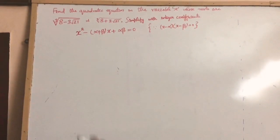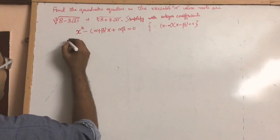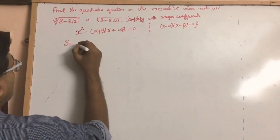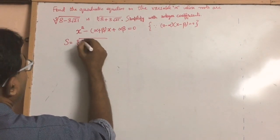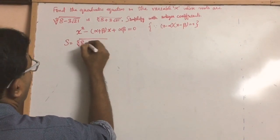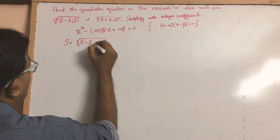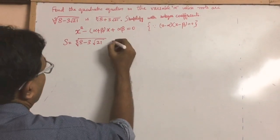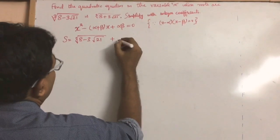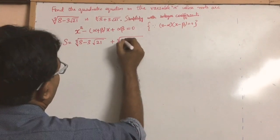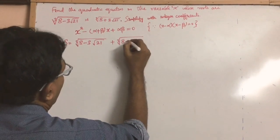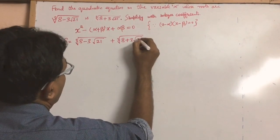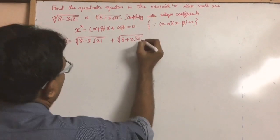The goal is to find S, which is: cube root of 8 minus 3 times square root of 21, plus cube root of 8 plus 3 times square root of 21.